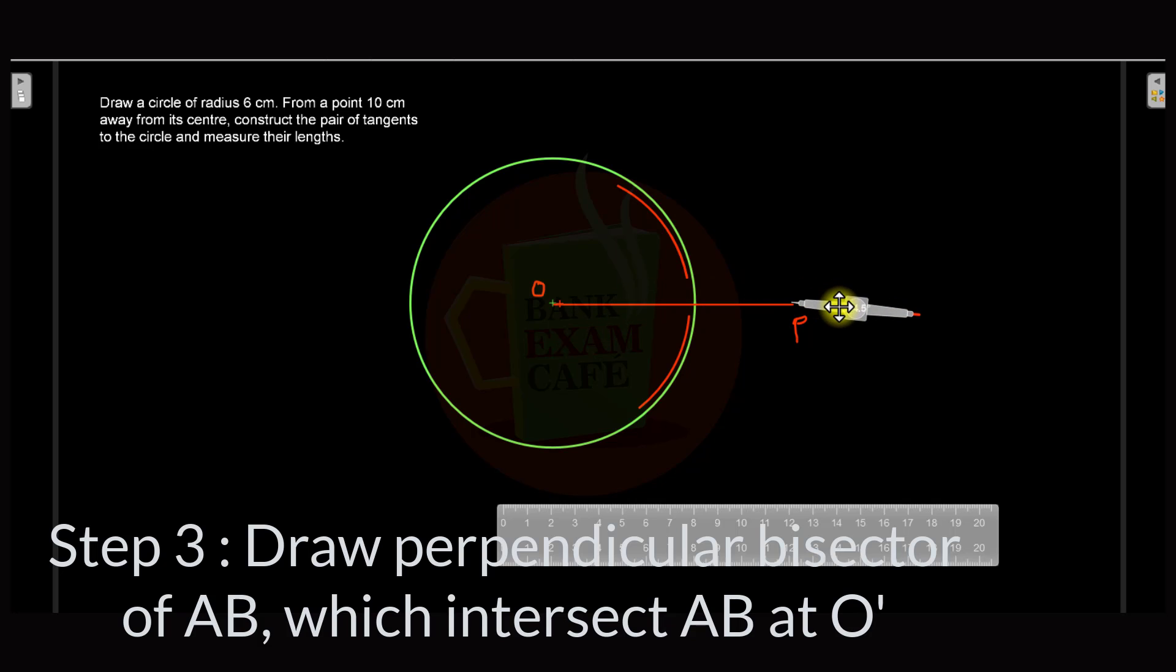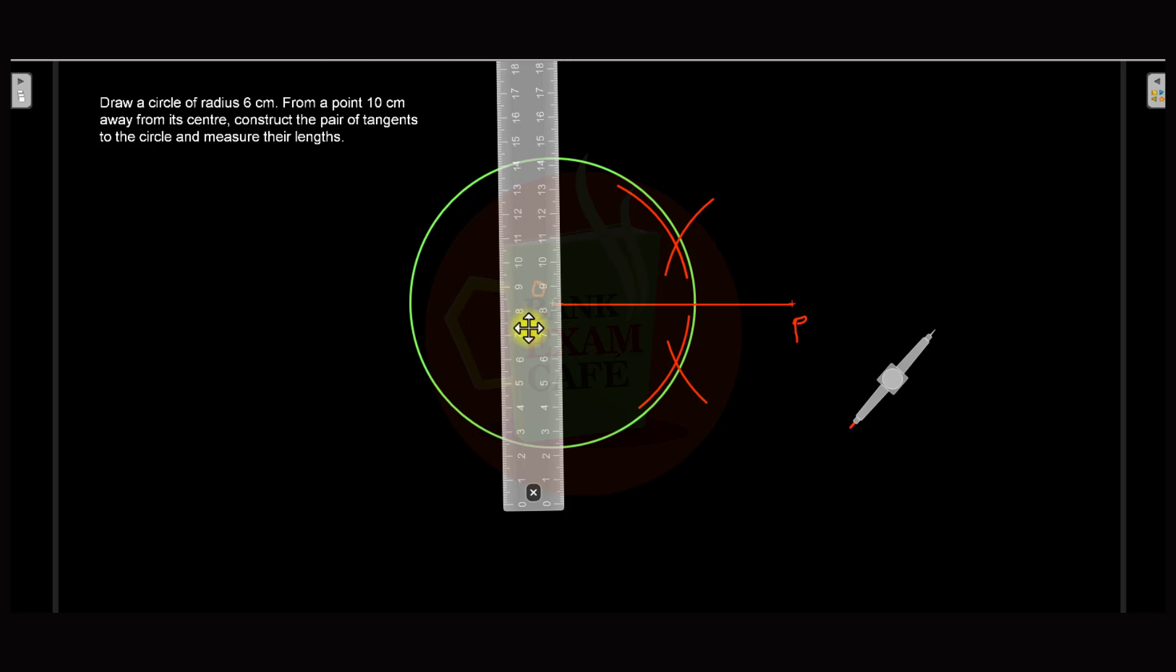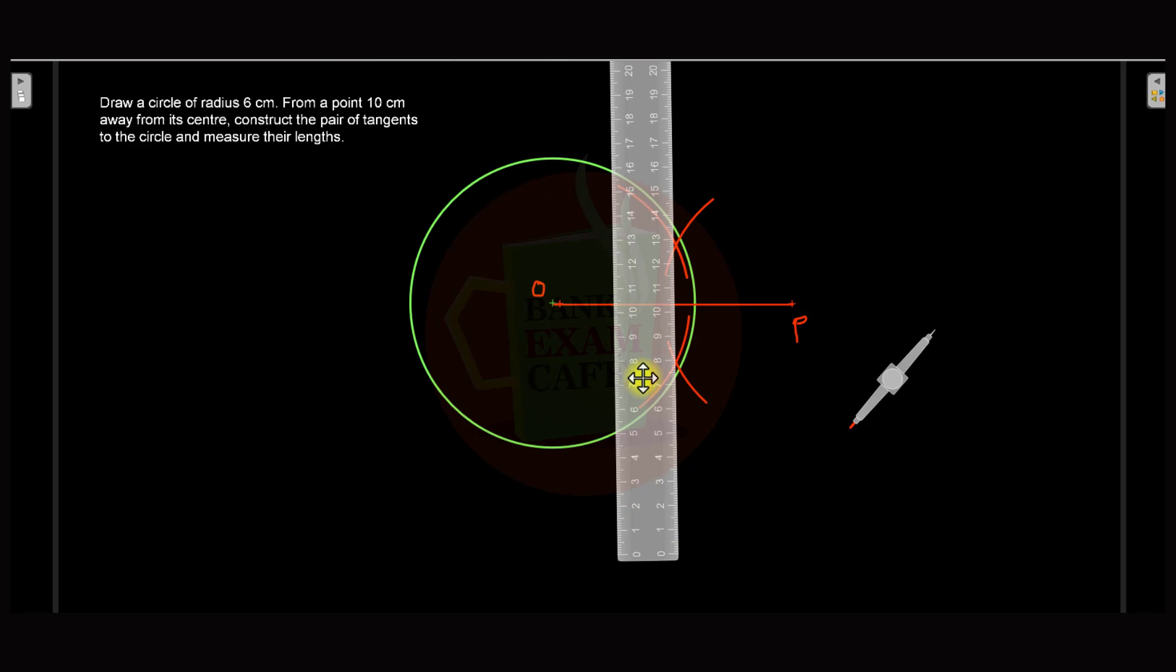Now we go to the other point P, put the pointer at point P, and then we keep the same distance as we have kept in the previous situation and draw the arc intersecting the previous arc. Then also to this side we draw an arc intersecting the previous arc, and now we draw a line segment passing through these two points of intersection.